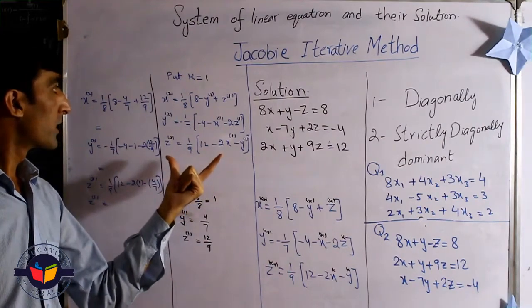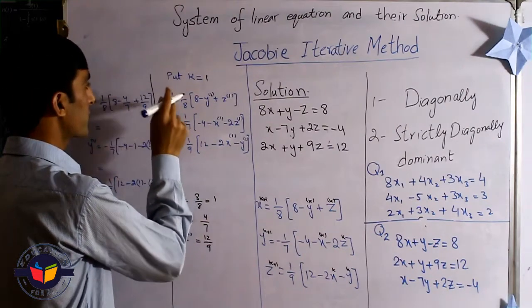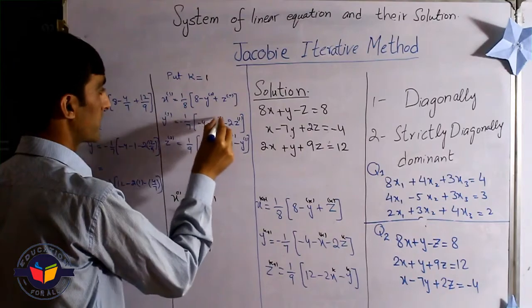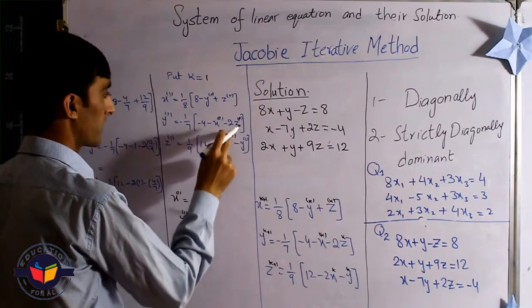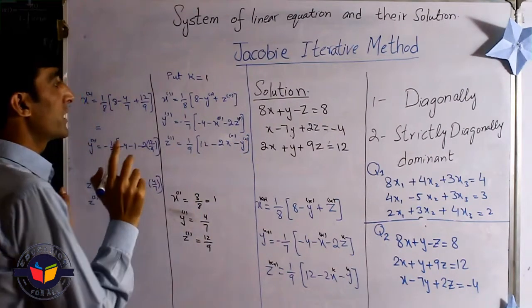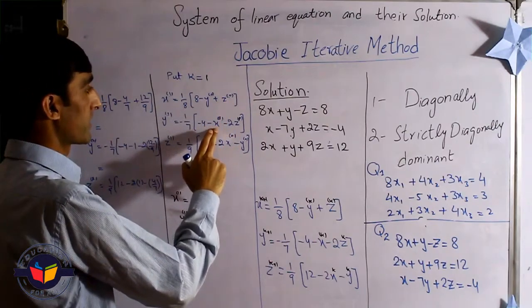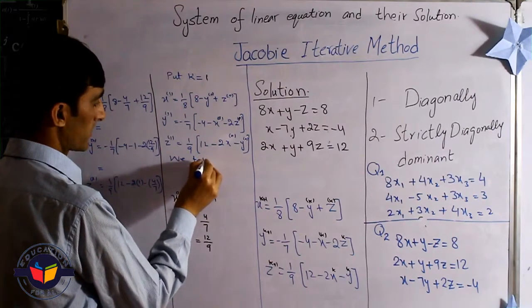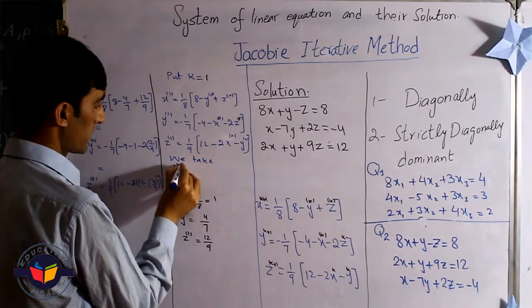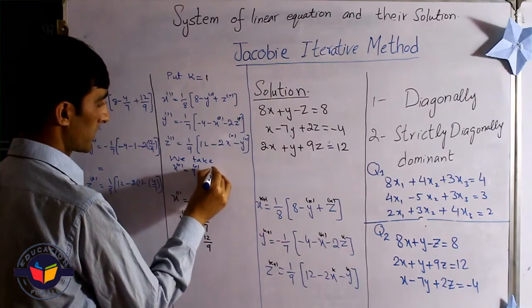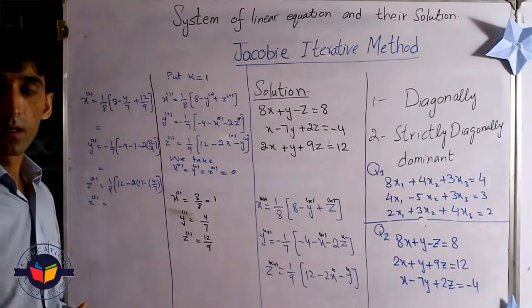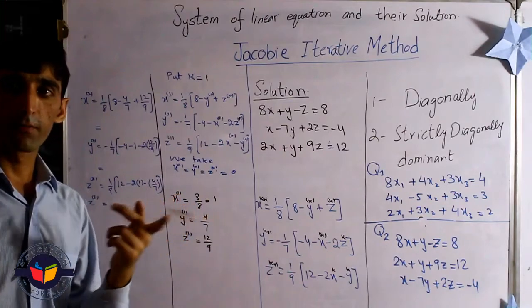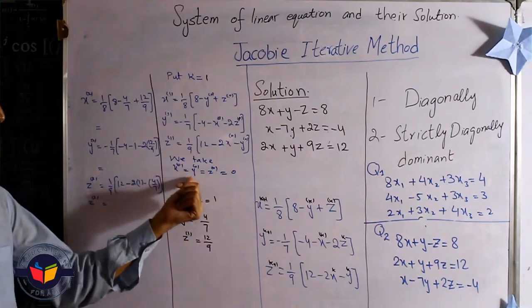Which values? When we put k equal to 1, here the value is 1 and here is 0, this one is 0. We need values of y₀, z₀, x₀, z₀. For this purpose, we take x₀ equal to y₀ equal to z₀ equal to 0. If in the given question, the initial values are given, then we use those values. If values are not given, in that case we use x₀, y₀, and z₀ equal to zero.